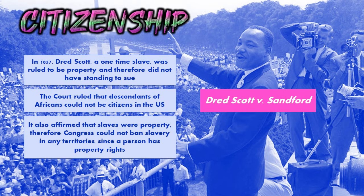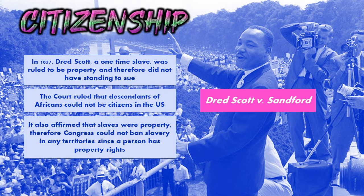He lived there with the person who owned him for many years, so he was freed at that point since there was no slavery in Illinois. Then he returned to Louisiana, and when the person who owned him died, he tried to get his own freedom — tried to purchase his freedom. The widow refused, so he tried to sue in court. Dred Scott versus Sanford is really just about a formerly enslaved man suing to guarantee his freedom.